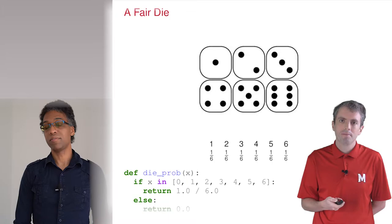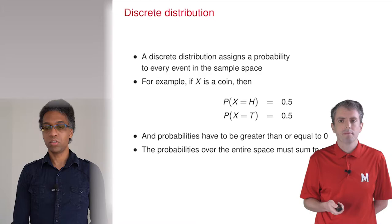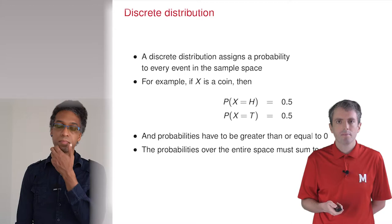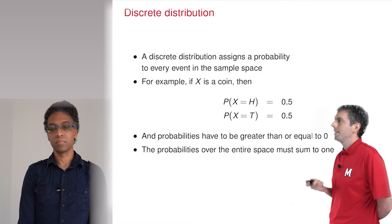Exactly. Are there any other rules that probabilities have to follow? Yeah, probabilities can't be negative. Right. If they were, you could make it sum to 1 if you had negative probabilities balanced with positive probabilities.